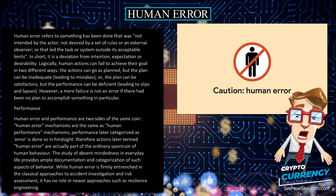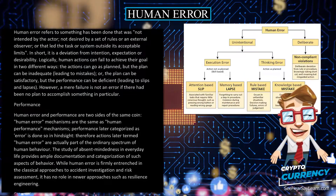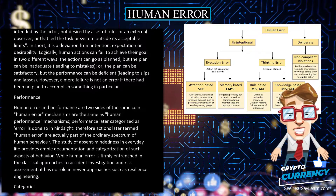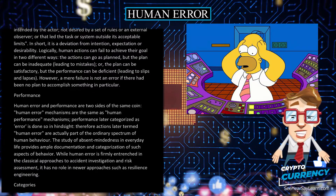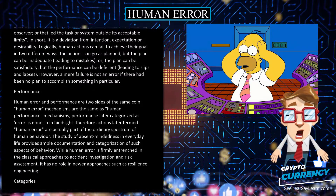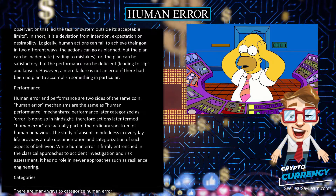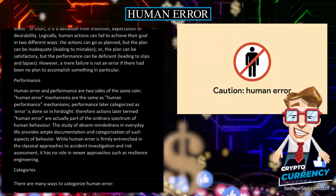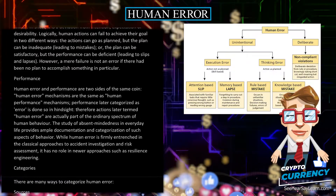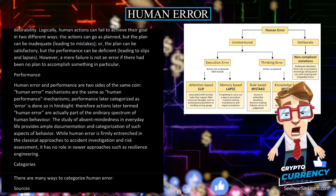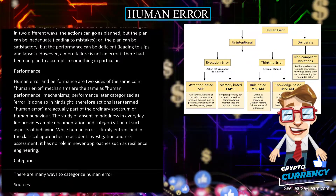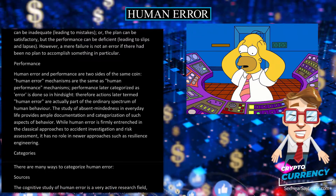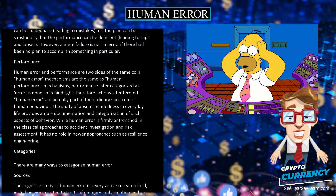Human error and performance are two sides of the same coin. Human error mechanisms are the same as human performance mechanisms; performance later categorized as error is done so in hindsight. Therefore, actions later termed human error are actually part of the ordinary spectrum of human behavior. The study of absent-mindedness in everyday life provides ample documentation and categorization of such aspects of behavior.